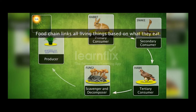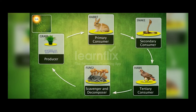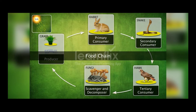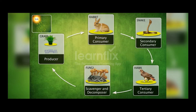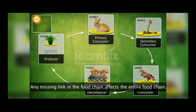All living components within a forest form a link based on which they eat. This link is called the food chain. A food chain shows how organisms are interdependent on each other for food. Every organism in a food chain is essential for the existence of the rest of the organisms. Any missing link in the food chain affects the entire food chain.